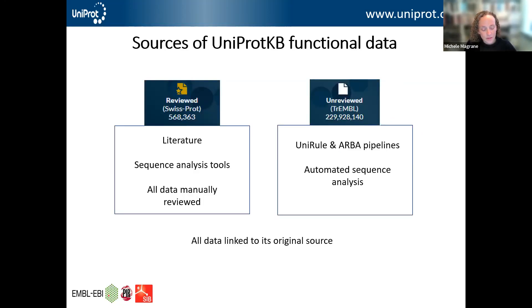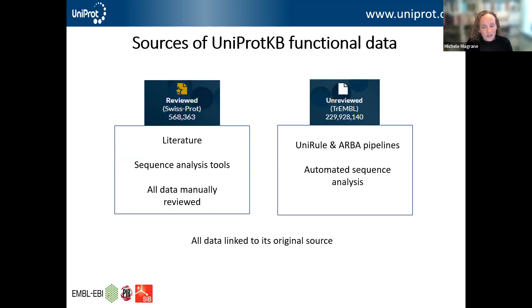To summarize the first part of the talk: UniProt KB, or UniProt Knowledge Base, is composed of two sections. The reviewed Swiss-Prot section contains just over half a million records, with information coming primarily from scientific literature combined with manually reviewed results from sequence analysis tools. The unreviewed TrEMBL section is much larger with almost 230 million records, and the information is completely automatic, coming from UniRule and ARBA pipelines as well as further automated sequence analysis. All data in both sections is linked back to its original source.